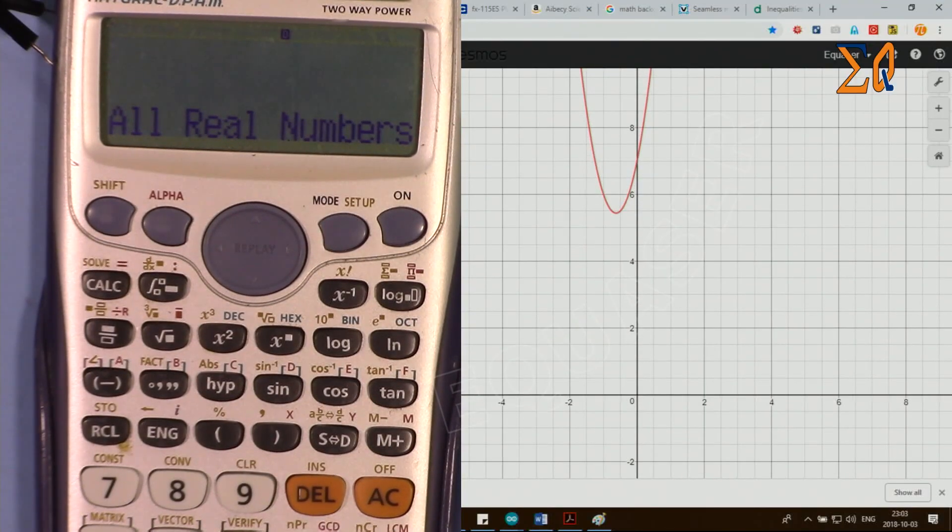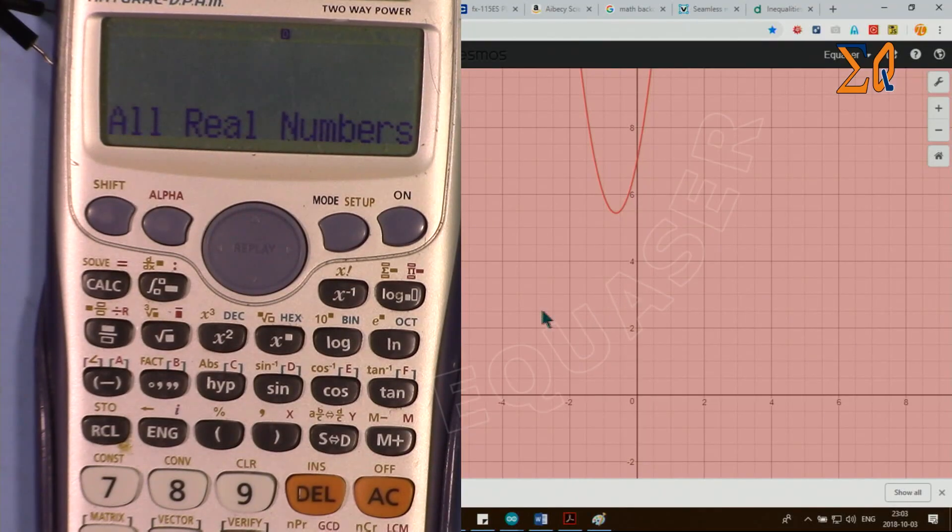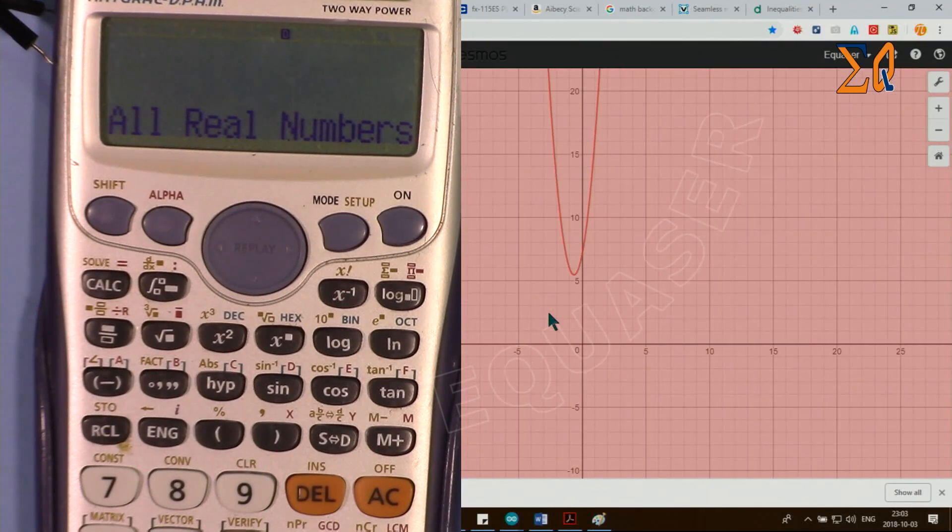And this is our equation. As you can see it's already bigger than zero, but if I want to draw the shade it's all real numbers.